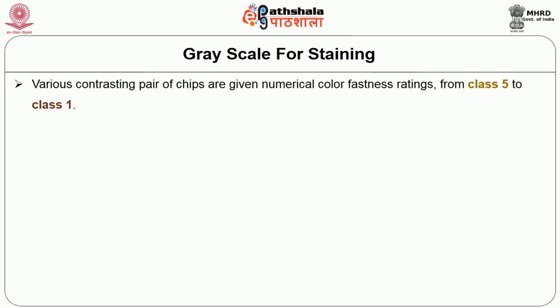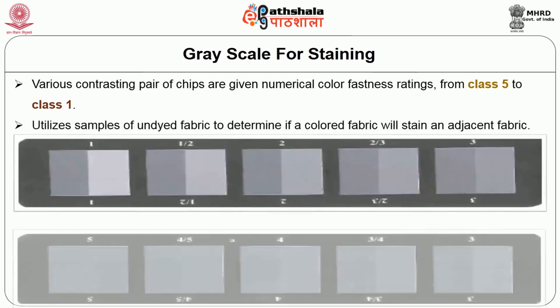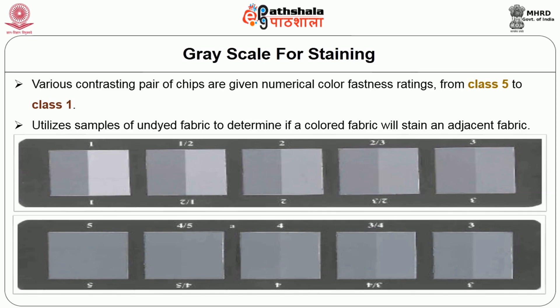For grayscale staining assessment, a multi-fiber strip containing acetate, cotton, nylon, polyester, acrylic, and wool is used. Various contrasting pairs of strips are rated from 5 to 1. This multi-fiber fabric is attached to the test fabric, all four sides are stitched, and placed in the laundry meter with specified temperature, detergent, and time. The sample is then taken out, dried, and assessed using the grayscale.